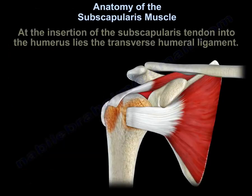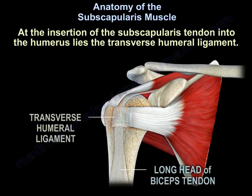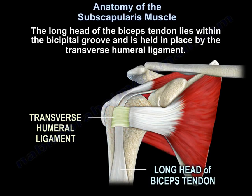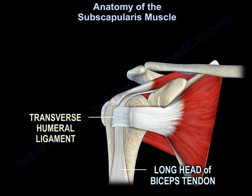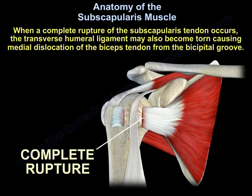At the insertion of the subscapularis tendon into the humerus lies the transverse humeral ligament. The long head of the biceps tendon lies within the bicipital groove and is held in place by the transverse humeral ligament. When a complete rupture of the subscapularis tendon occurs, the transverse humeral ligament may also become torn, causing medial dislocation of the biceps tendon from its bicipital groove.